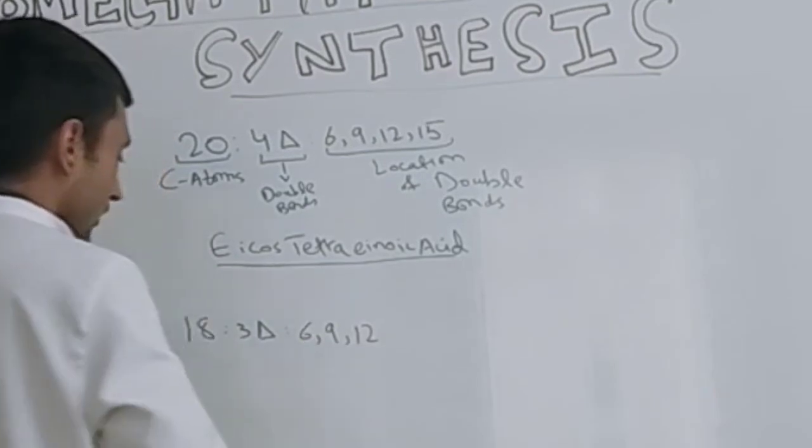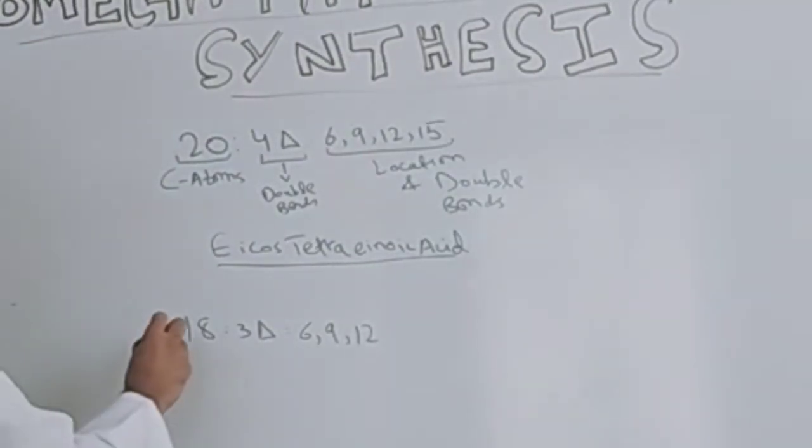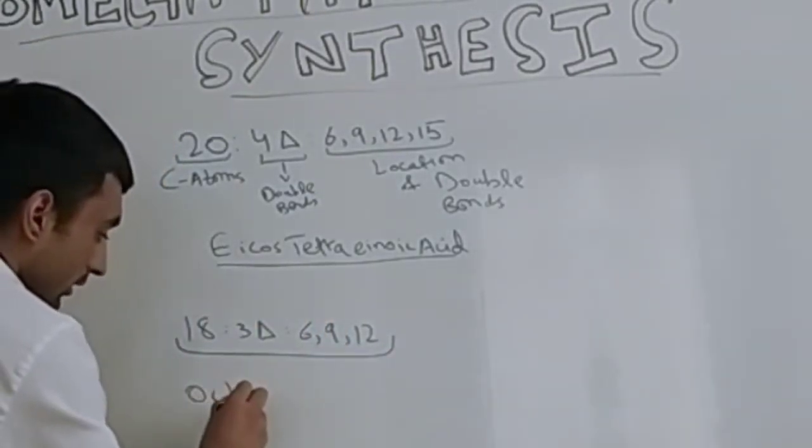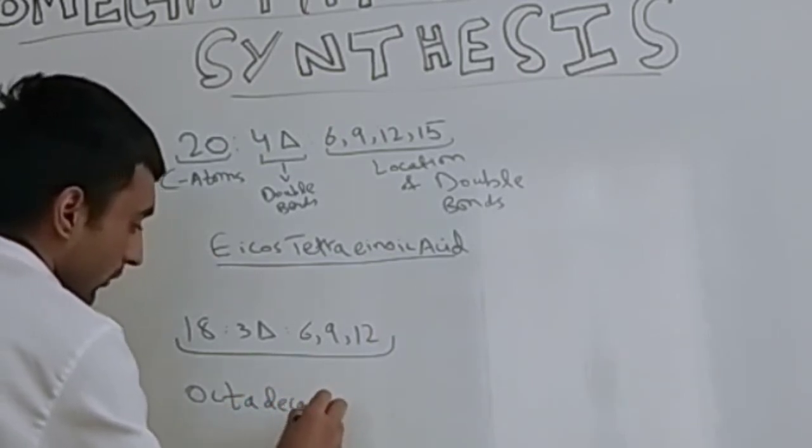What would be the name of this chain? The name of this chain would be octadecatrienoic acid.